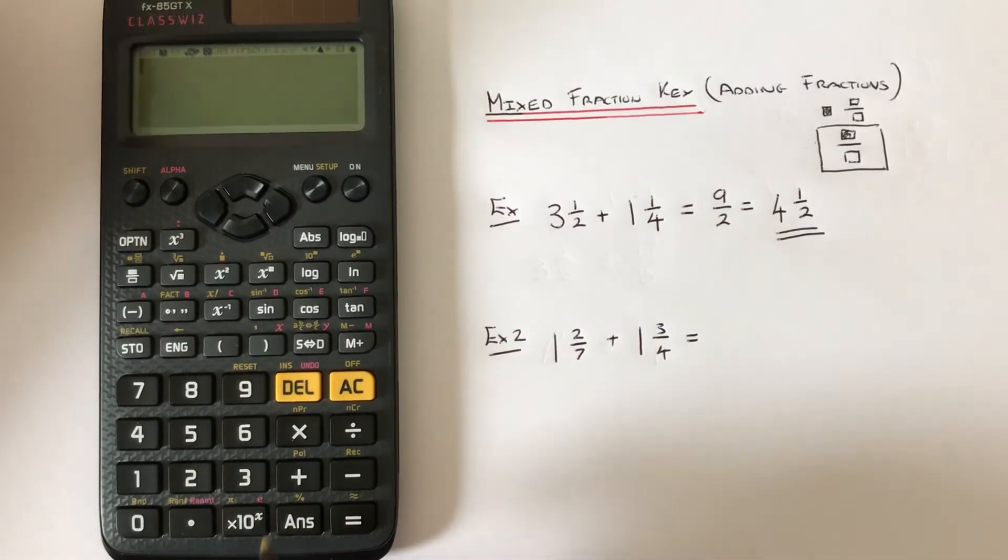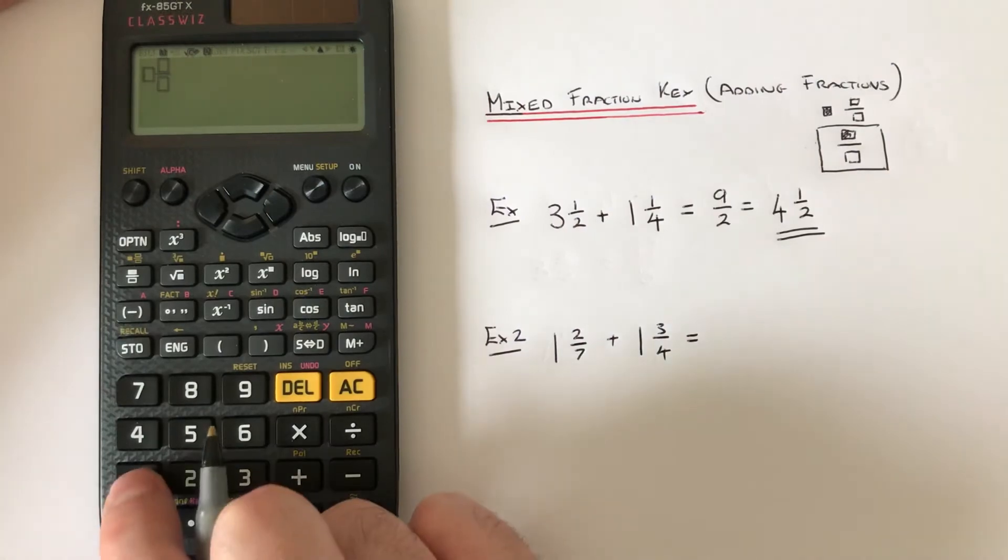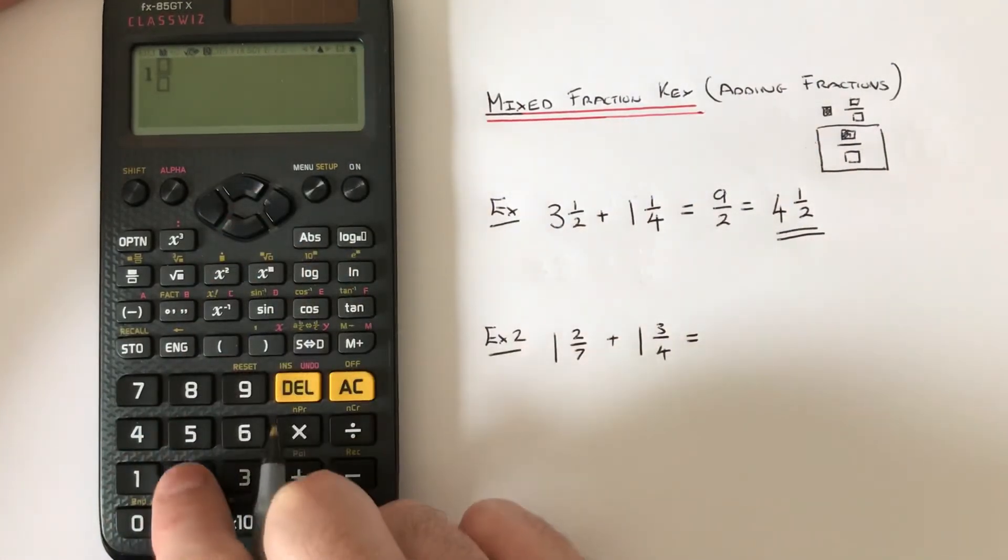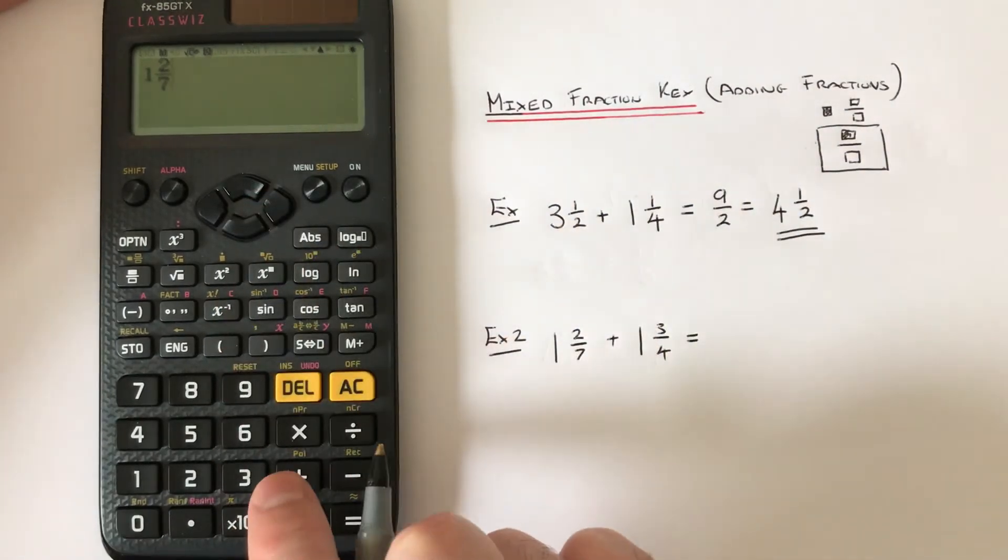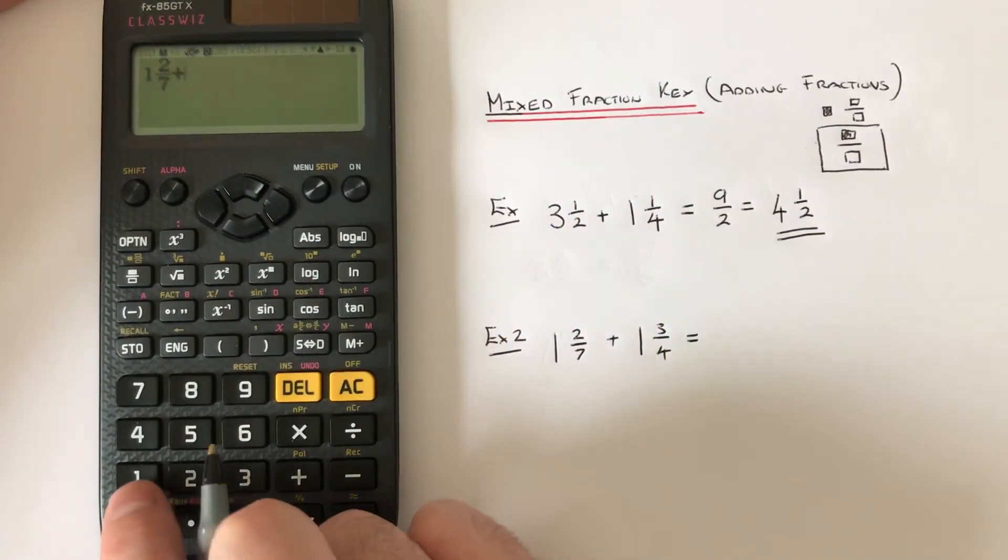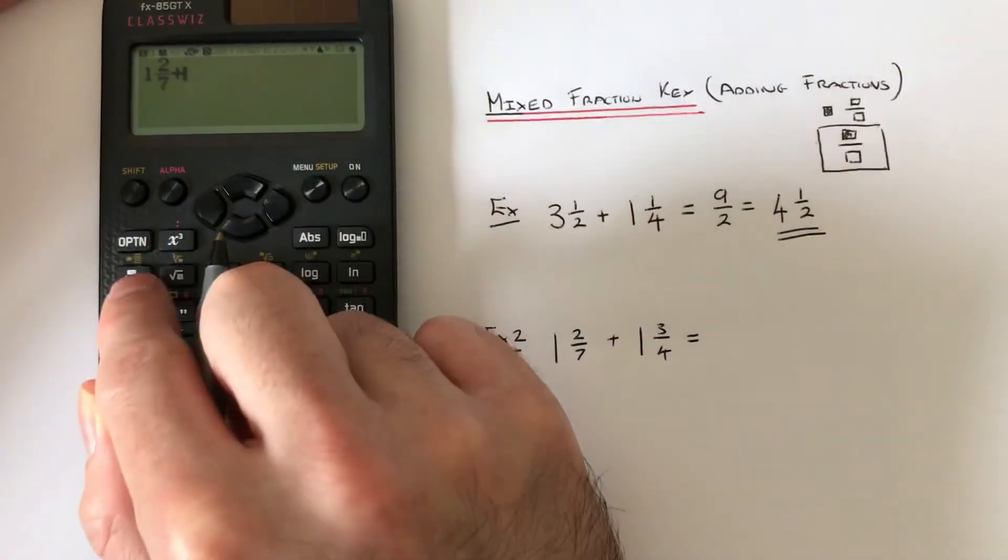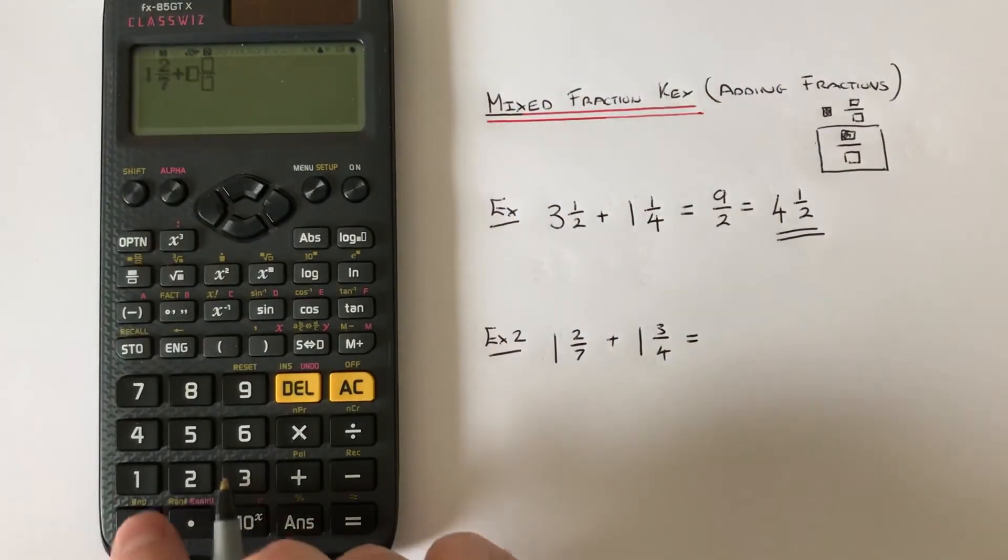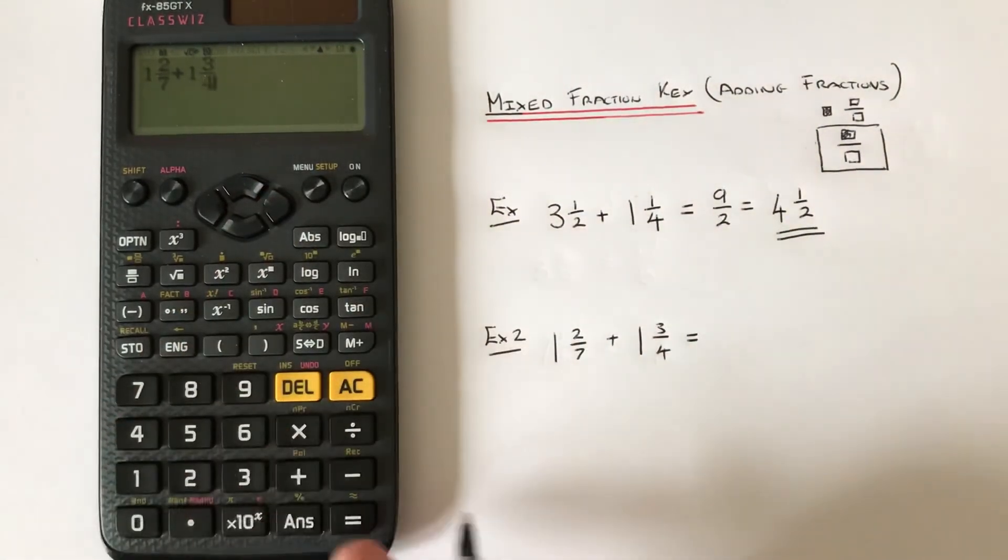Then shift, mixed fraction, 1, right key, 3, right key, 4, then press equals.